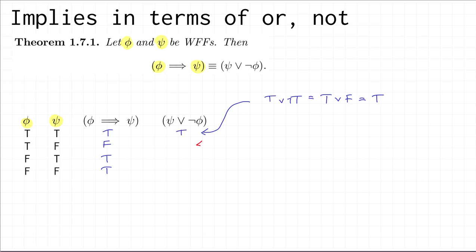Next let's work out the truth value when phi is true and psi is false. So we have: false OR NOT true, which is false OR false, which is false.